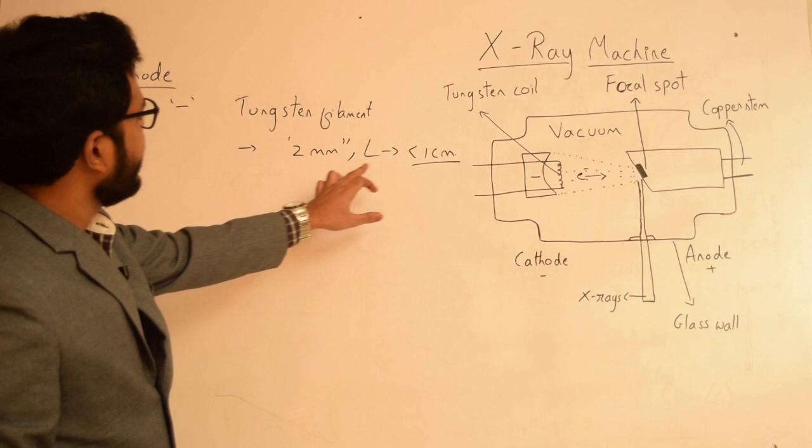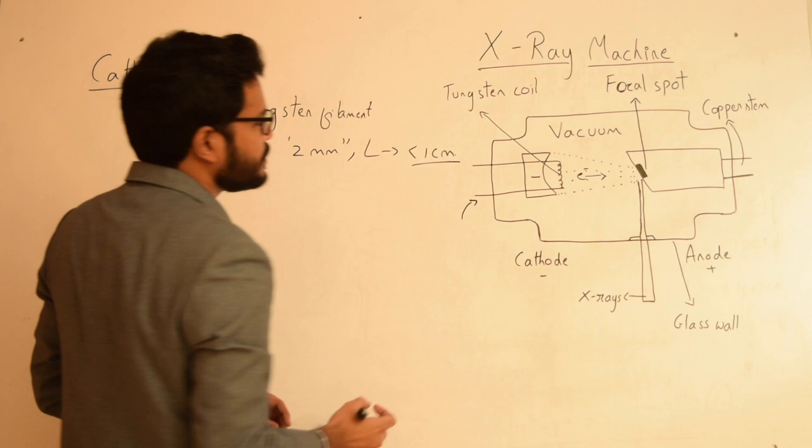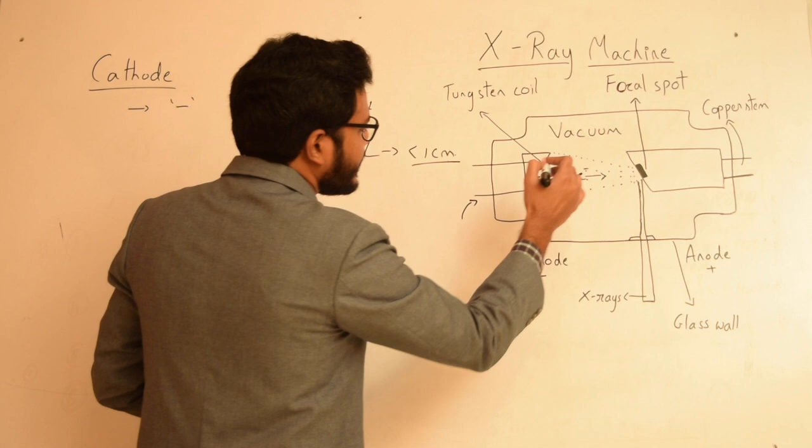The tungsten filament is connected to two strong stiff wires through which electricity is passed. When electricity is passed through these wires, the entire coil gets heated up, and as a result it starts emitting electrons.